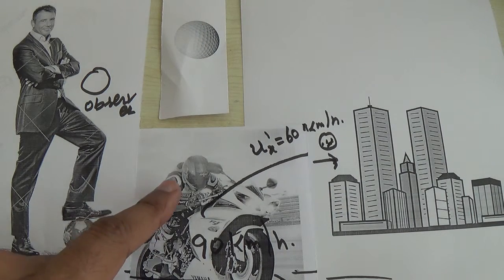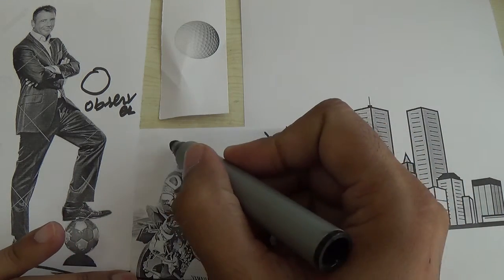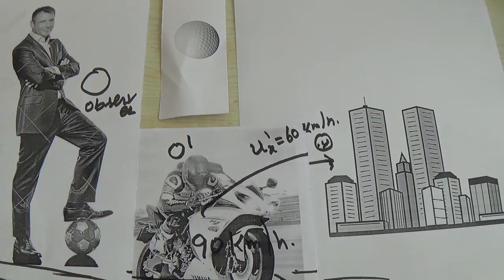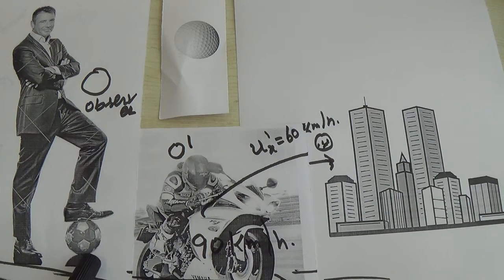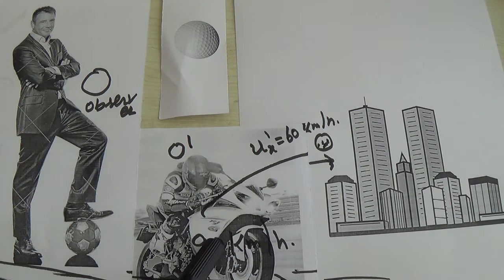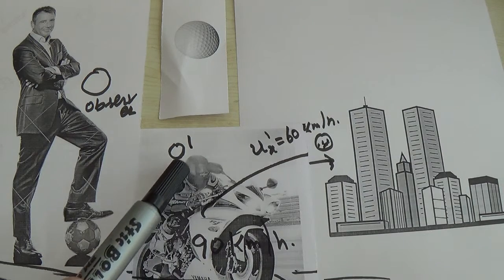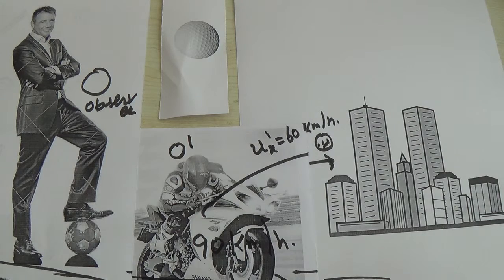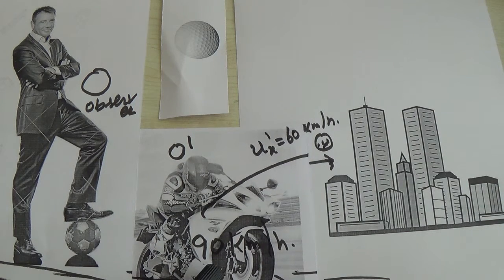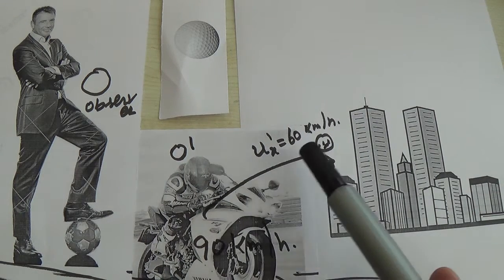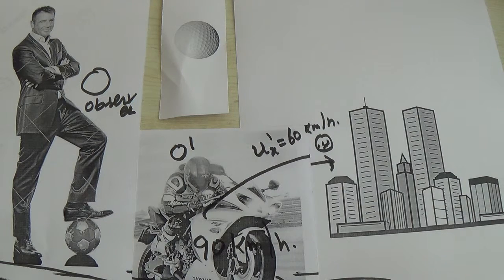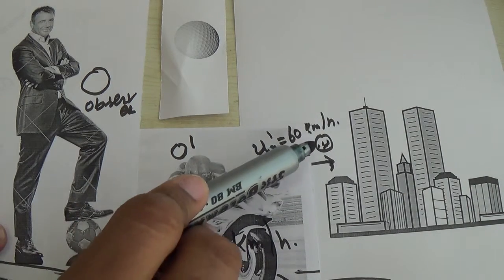The rider is observer O prime, and the bike is the moving frame. The man standing on the surface of the road — on the surface of the earth — is in the stationary frame and is observer O. The speed of the bike with respect to this person is 90 km per hour, and the person throws a ball towards the building at 60 km per hour. The question is: what will be the speed of the ball according to observer O?